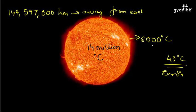Light from the Sun takes about only 8 minutes and 20 seconds to reach us.